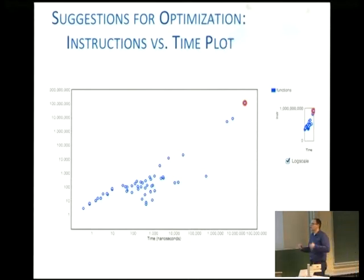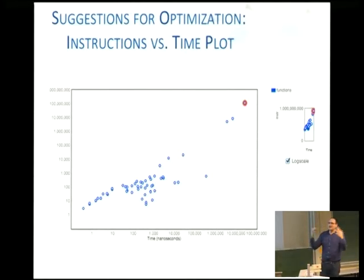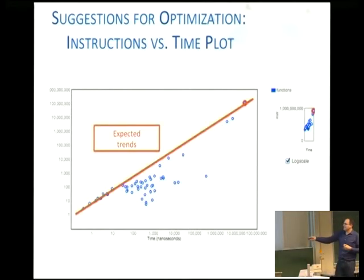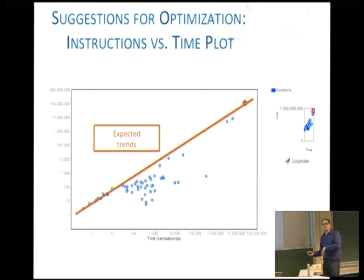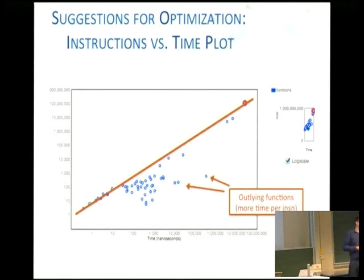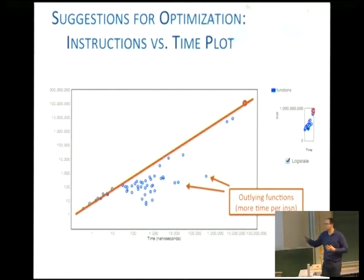We also have some more experimental research. The idea is: how can we analyze the entire application in a more straightforward way to understand what's going wrong? On the x-axis is time and on the y-axis is number of instructions. Normally you'd expect linear behavior, but there are outliers — functions where you're spending more time compared to others. These are the functions you'd want to investigate and optimize.